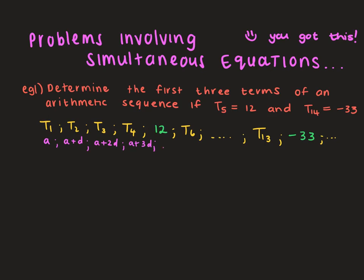Another way of writing term 5, which they said was 12: A plus 4 constant differences equals 12. And I'm going to make A the subject of the formula here.